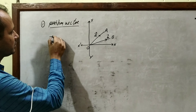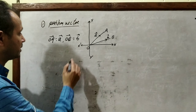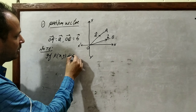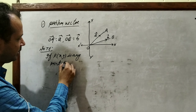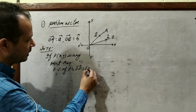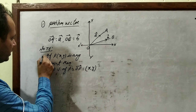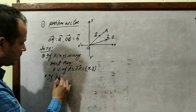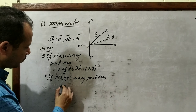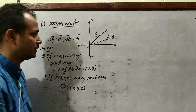So OA = vector a is an example of a position vector, and OB = vector b is another example. If P(x, y) is any point, then the position vector of P is OP, which can be written as (x, y) — and we can also write this using i-vector and j-vector. If P(x, y, z) is any point in space, then OP = (x, y, z). This is the meaning of position vector.